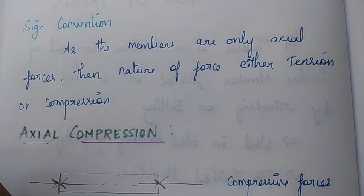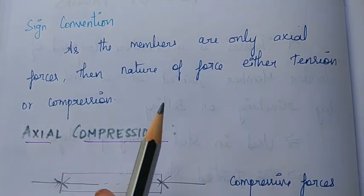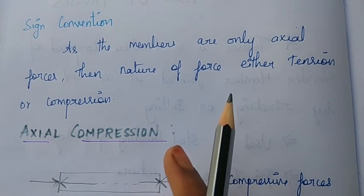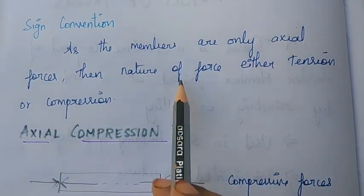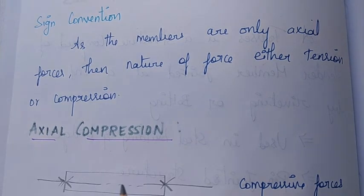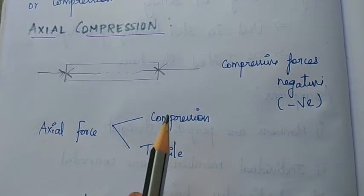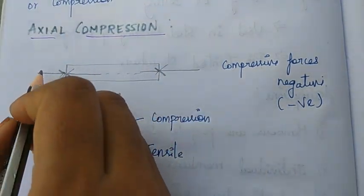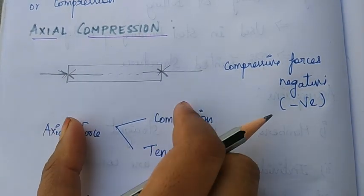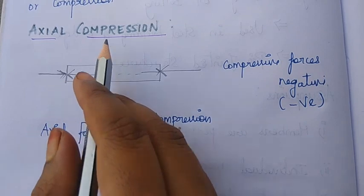Next is sign convention. Since members carry only axial force, it is either tension or compression. First: axial compression. In a member under compression, the force is pushed inward from both ends — like pushing the member. The compression force indicates a negative sign.